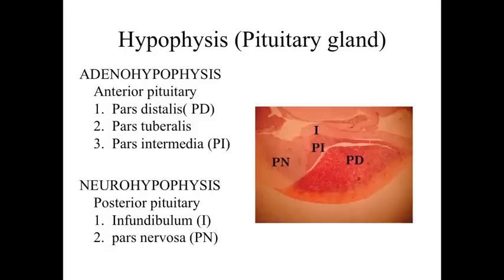If we take a look at the pituitary gland, there are going to be two distinct structures and two distinct regions associated with it. We're going to have the adenohypophysis, and the adenohypophysis is the anterior pituitary. The anterior pituitary is going to be composed of the pars distalis, labeled PD on this slide, the pars tuberalis, and the pars intermedia, labeled PI on this slide.